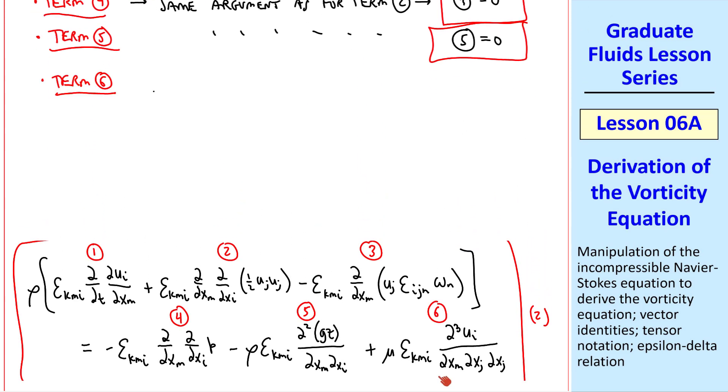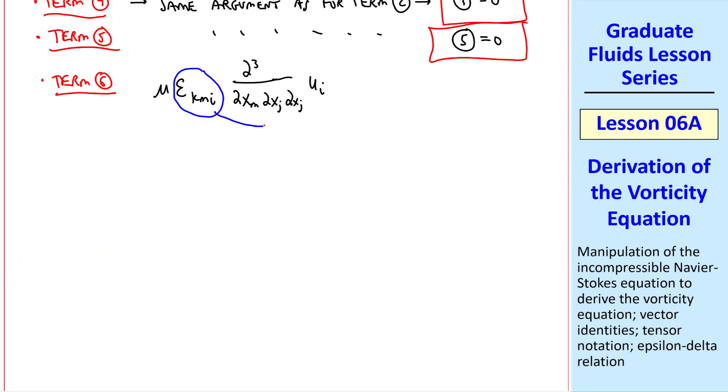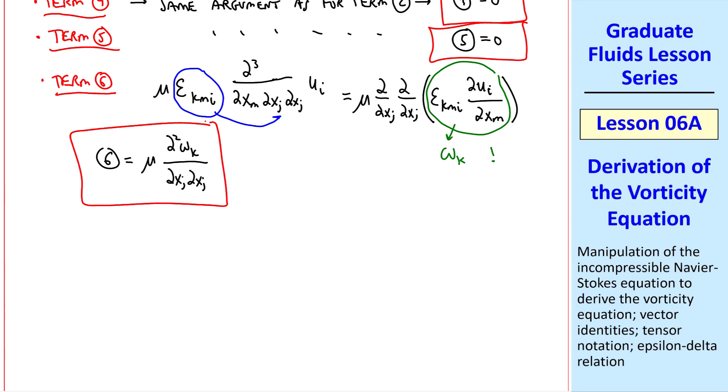Now let's examine term 6, which I'll rewrite here. Again, epsilon is not a function of space or time. So we could move it inside the derivatives wherever we want. So we'll write this as mu del del xj del del xj of epsilon kmi del ui del xm. Note that we also switch the order of the differentiation. Instead of mjj, we write jjm, because the order of differentiation doesn't matter. Again, we recognize this as omega k. So term 6 becomes mu del squared omega k del xj del xj, which is the Laplacian of the vorticity vector. Finally, let's go back to term 3.